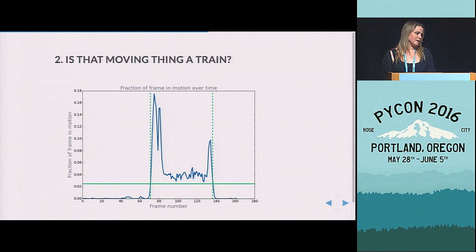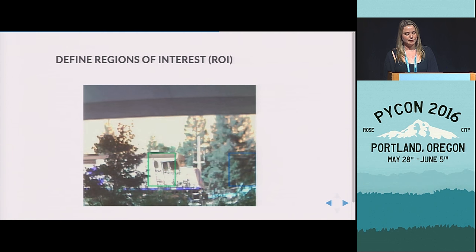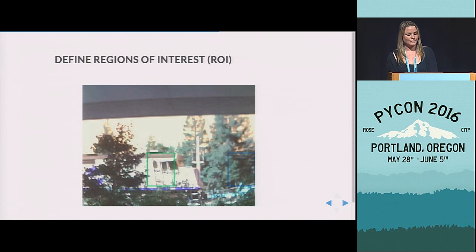But what can we say about the direction of the train? It doesn't really help if we don't know if the train is going north or south because we want to identify which train it is. So what we can do in this case is use the fact that if a train is coming southbound, it's going to enter from the left of the frame, and if it's going northbound, it'll enter from the right.